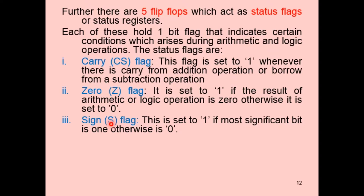The sign flag, designated S, is set to 1 if the most significant bit of the result is 1; otherwise it is 0. In binary representation, the most significant bit indicates the sign, and when it is 1 the sign flag is set to 1, and when it is 0 the sign flag is set to 0.